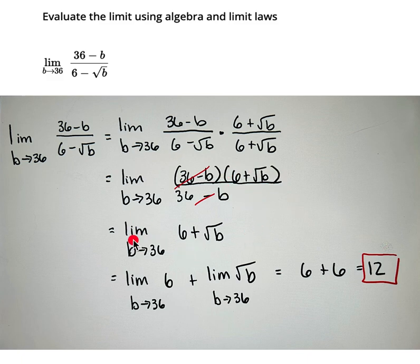So I'm going to take the limit as b approaches 36 of 6 plus the square root of b. Now this is where our limit laws come in. I can break it down into its parts.